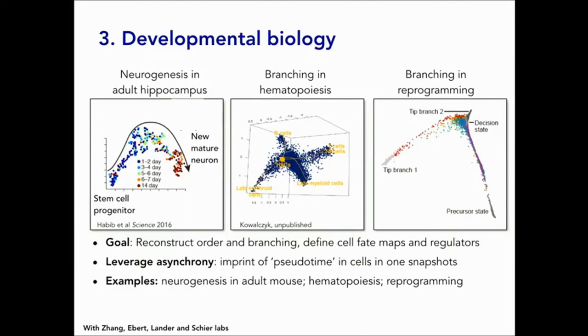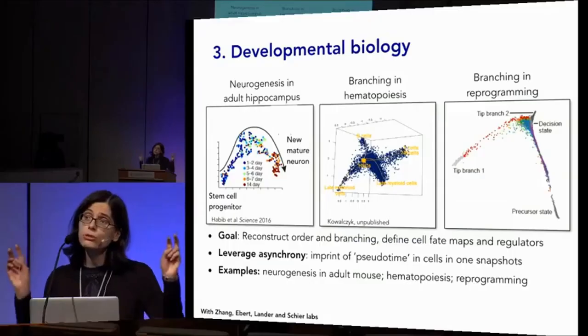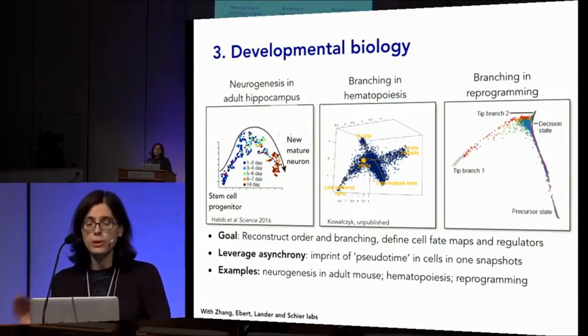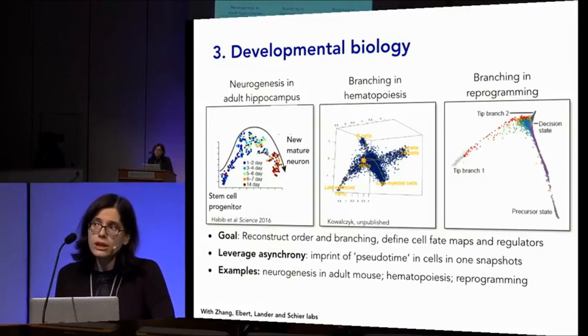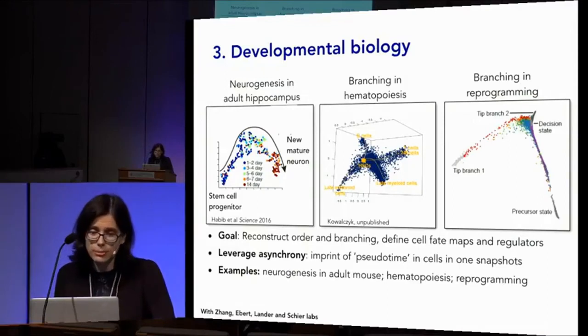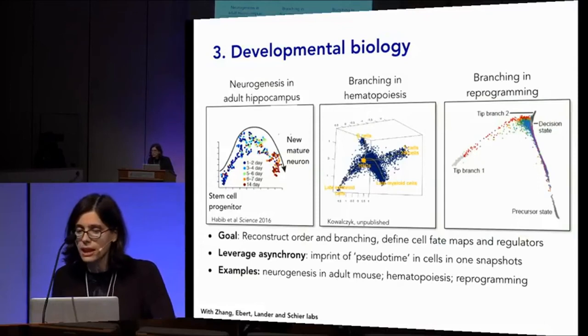Cells are not static entities — they're dynamic and have histories, including a developmental history. One of the remarkable successes of this community has been showing that we can take a snapshot of right now and pseudo-order cells based on different points they assume in a trajectory. Each cell is only at one point in time, but they are part of a continuum. We're leveraging asynchrony — biologists have always fought against heterogeneity and asynchrony, but single-cell and in-situ analysis allow us to leverage it. This leads to examples from linear processes like neurogenesis in the adult brain, branching processes like hematopoiesis, and programming and reprogramming of stem cells.